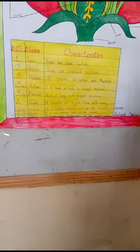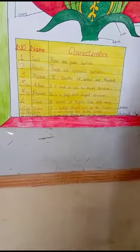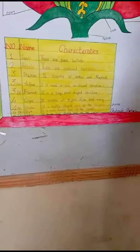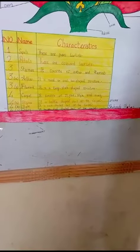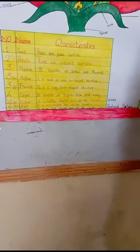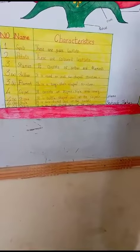The first part is stigma. It is the bottle-shaped part of the pistil. Part B is the style. It is the neck-shaped part of the pistil.